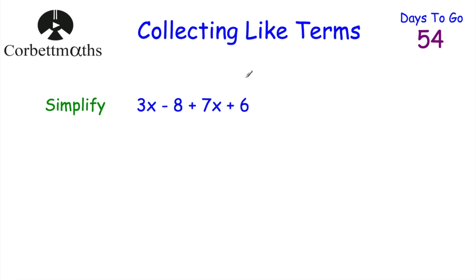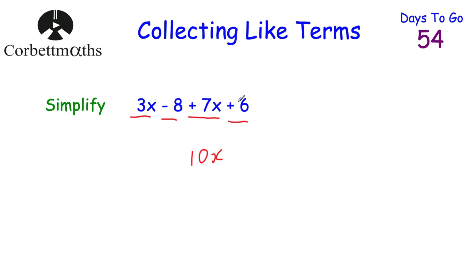Next, simplify 3x − 8 + 7x + 6. Feel free to press pause and try it yourself. We collect the like terms — starting with the x's: 3x + 7x = 10x. Now the numbers: −8 + 6 = −2. Another way to think of it: negative 8 plus 6 is negative 2. So the answer is 10x − 2. Well done if you got that.